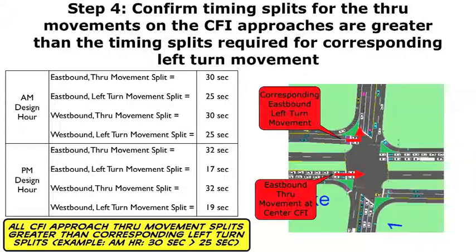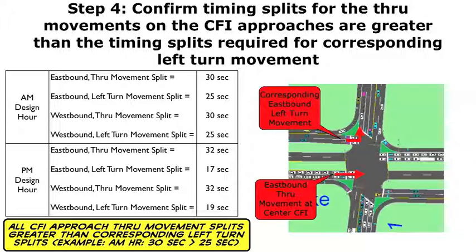And this is critical. This is a step that could easily be overlooked by one assuming that the through movements are always greater than the left turn movements. While that is usually the case, it's not always the case, and it needs to be verified. I'm not going to go into detail with the PM design hour, but hopefully I explained it clearly enough that you understand. For this example, all the CFI approach through movement splits are greater than the corresponding left turn splits on the CFI approaches.